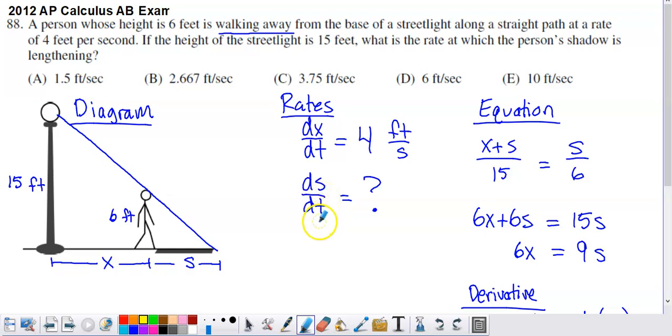One thing that we have access to in order to help us find this is we have access to the rate at which X is growing. X is growing at a rate of 4 feet per second. The person's walking away from the street light at a rate of 4 feet per second. So that would not be the measure of X. That would be one mistake I'd be worried about seeing people make here.